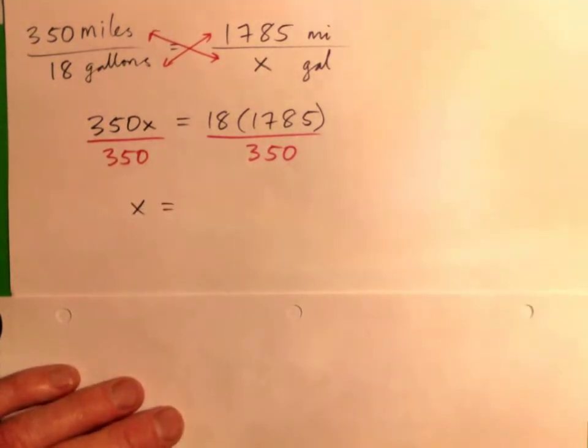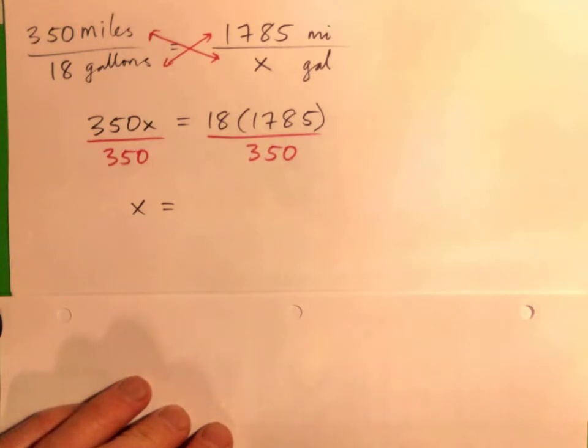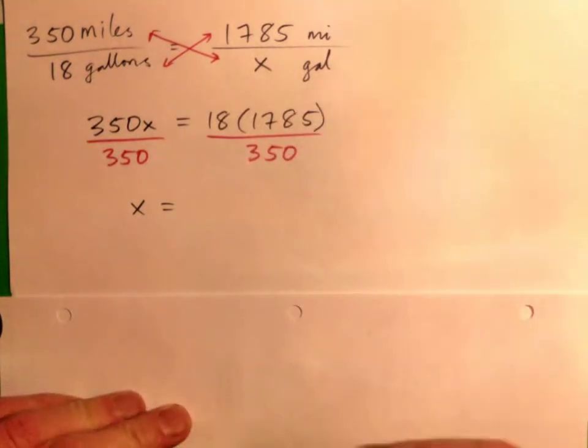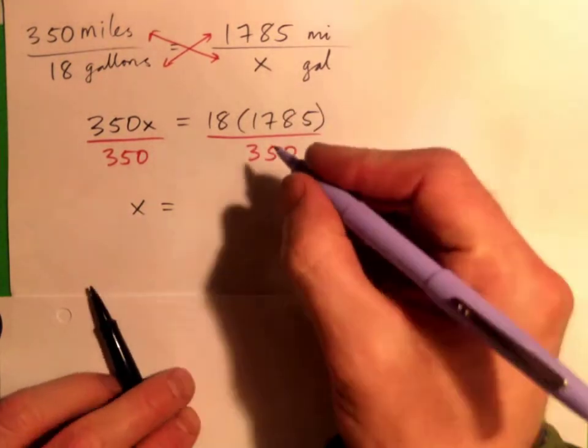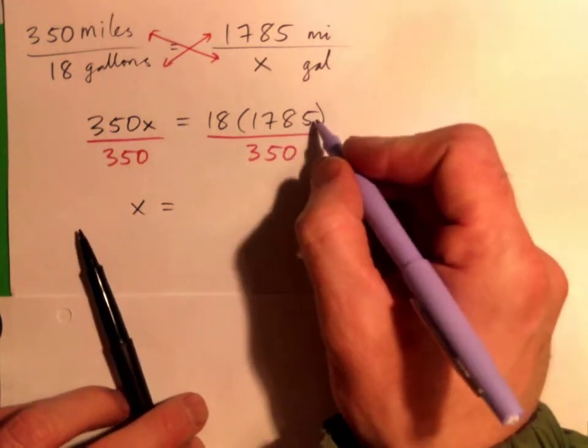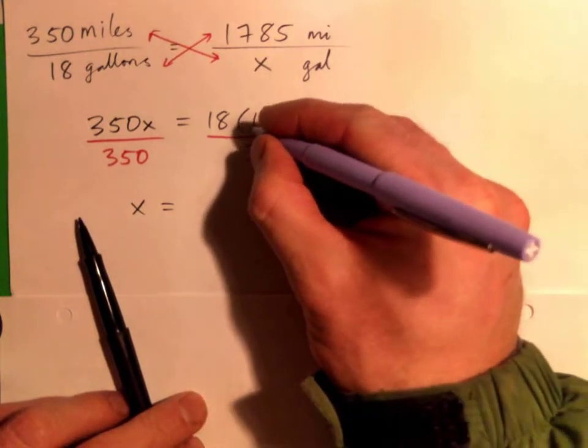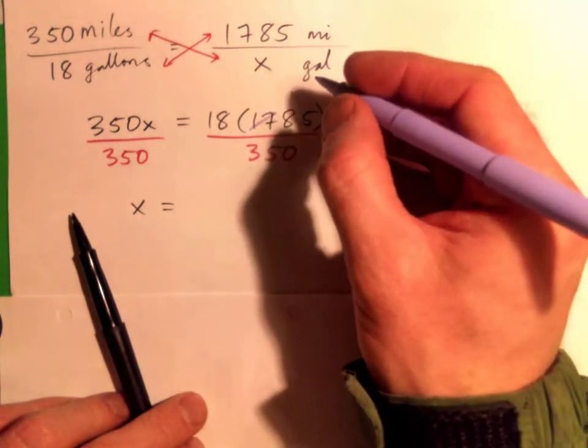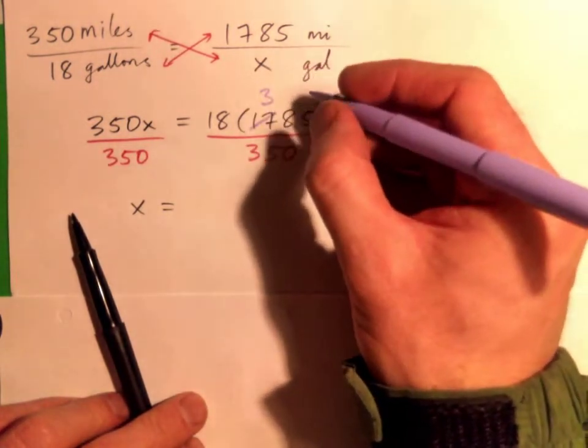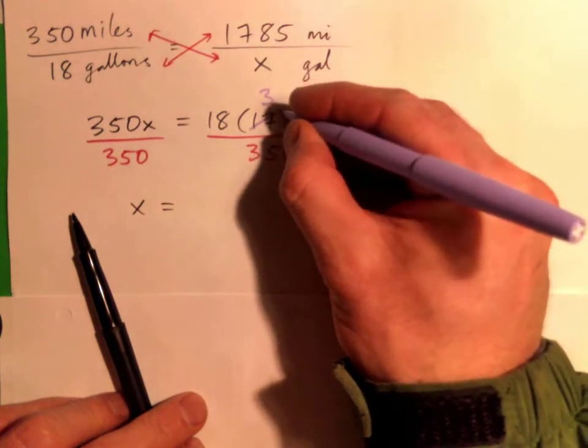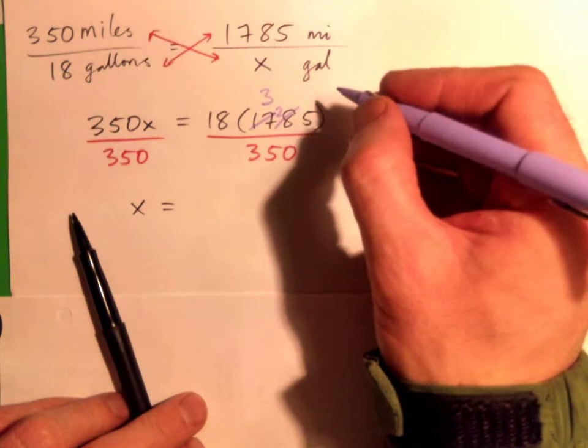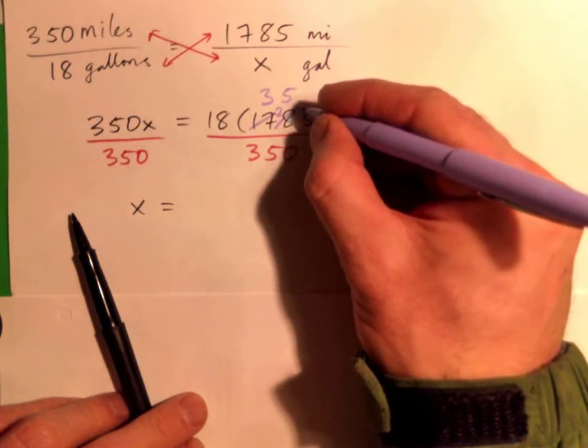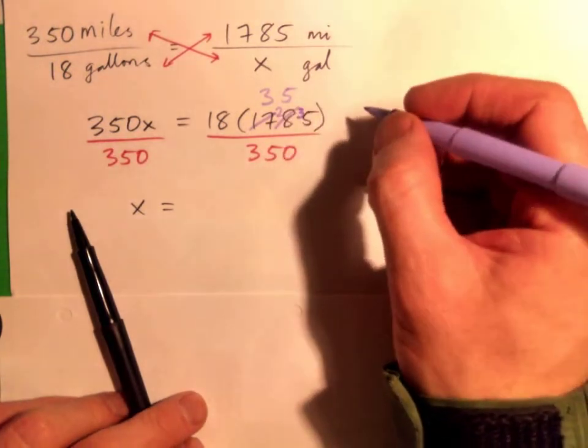And you could multiply that in, but it might be better to just try dividing first. And I know that 5 will go into this and this number because this ends in 5, this ends in 0. So 5 into 17 goes 3 remainder 2. 5 into 28, 5 remainder 3, because 28 minus 25 is 3.